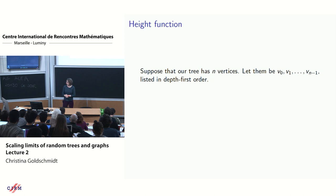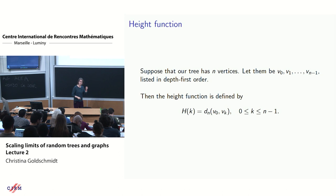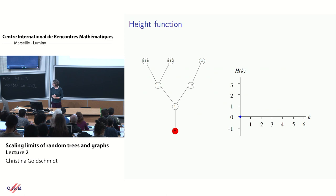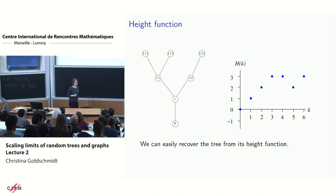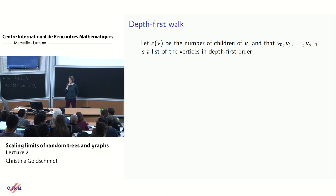Suppose our tree has n vertices labeled v_0, v_1, up to v_{n-1} in depth-first order. The height function is simply how far we are from the root at step k of the exploration — that is, the graph distance between v_0 and v_k. On a little example, I'm just exploring the tree in depth-first order and recording distance from the root. You can recover the tree from the height function.